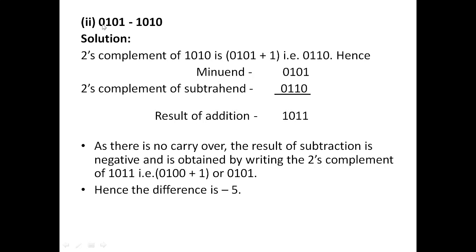Now let's do the reverse. We have an example: 0101 minus 1010. We all know 1010 is the binary representation of 10. So if we subtract 10 from 5, obviously the result could be negative 5. We have to remember that two's complement representation is a way of representing negative numbers in the binary domain.